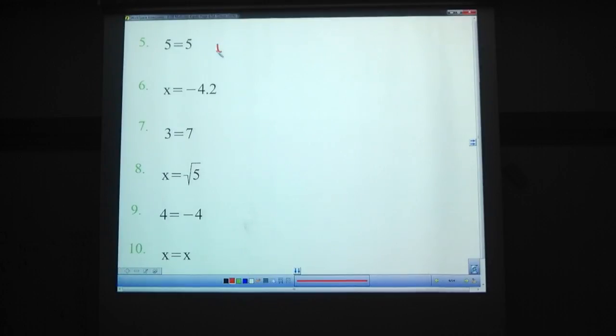So 5 equals 5. That's infinitely many. X equals negative 4.2. That is one solution. 3 equals 7. Those are not equal. No solution. X equals square root of 5. One solution. 4 equals negative 4. Those are not equal. No solutions. And X equals X. There's infinitely many solutions there. Yay.